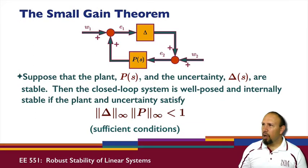Now we're looking at the small gain theorem. In the small gain theorem we consider a system like this where we have a loop, a feedback, and so suppose that the plant and the uncertainty delta are stable.